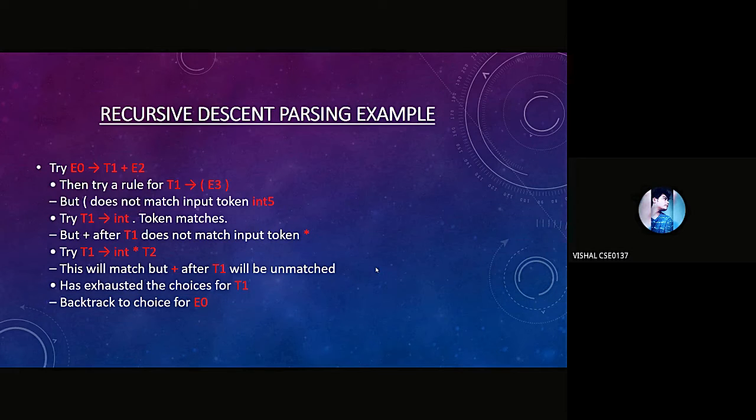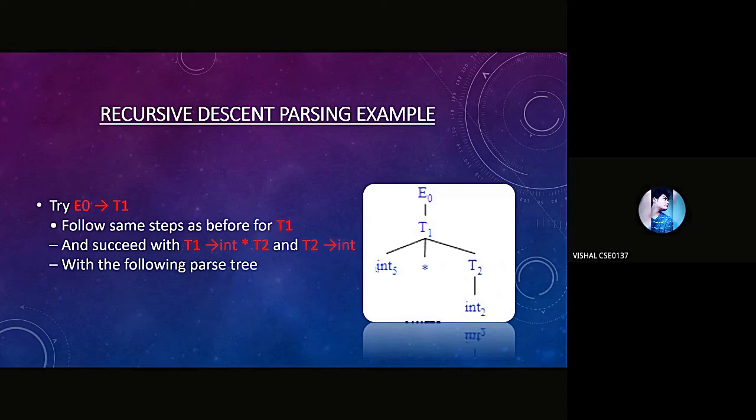We try E₀ → T₁, then T₁ → T₂ + T₂. We try the rule for T₁ → int, but the token doesn't match. Then we try T₁ → int * T₂. The token matches, but after T₁ it doesn't match the input token. So we backtrack to the choice for E₀. Now we try E₀ → T₁ again, following the same steps as before for T₁. We succeed with T₁ → int * T₂ and T₂ → int, following the FIRST set, as shown in the diagram.